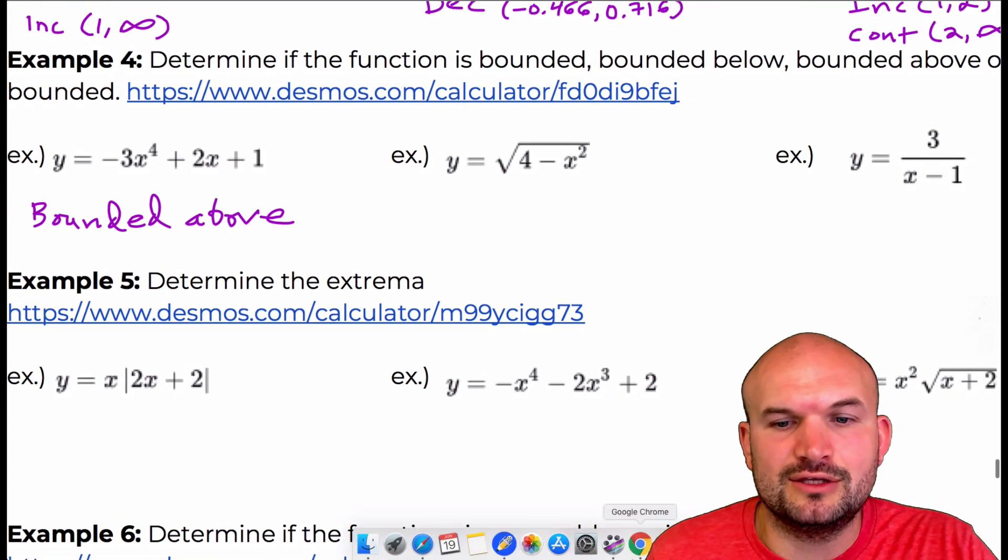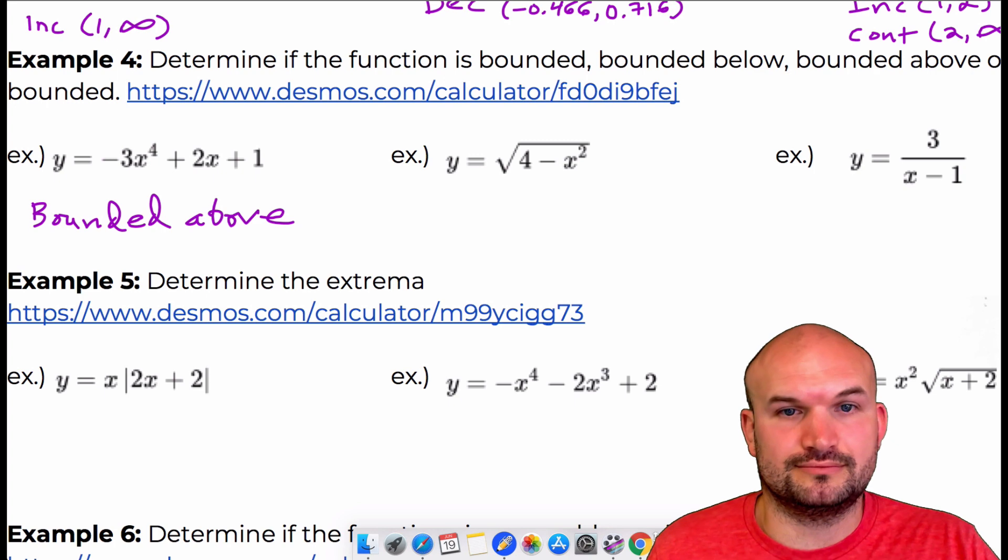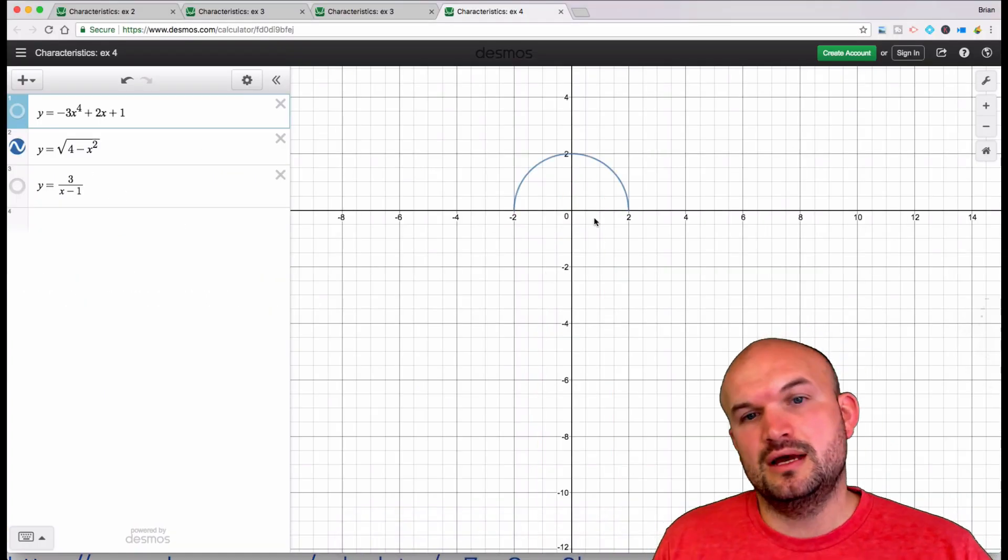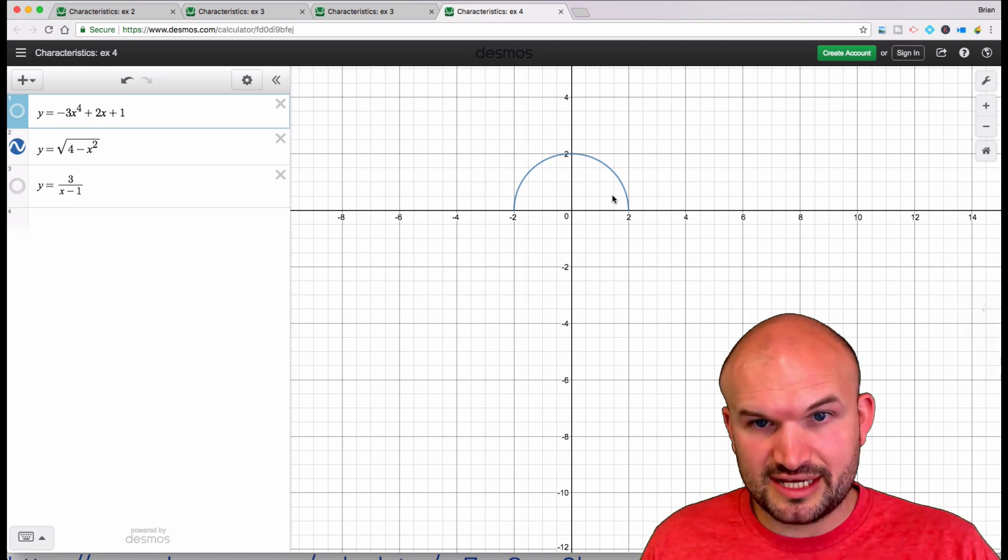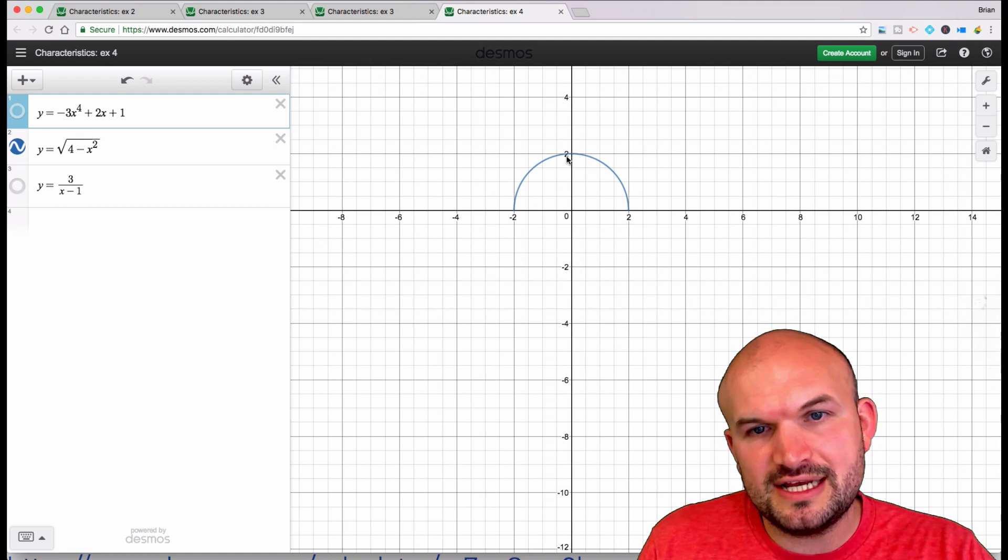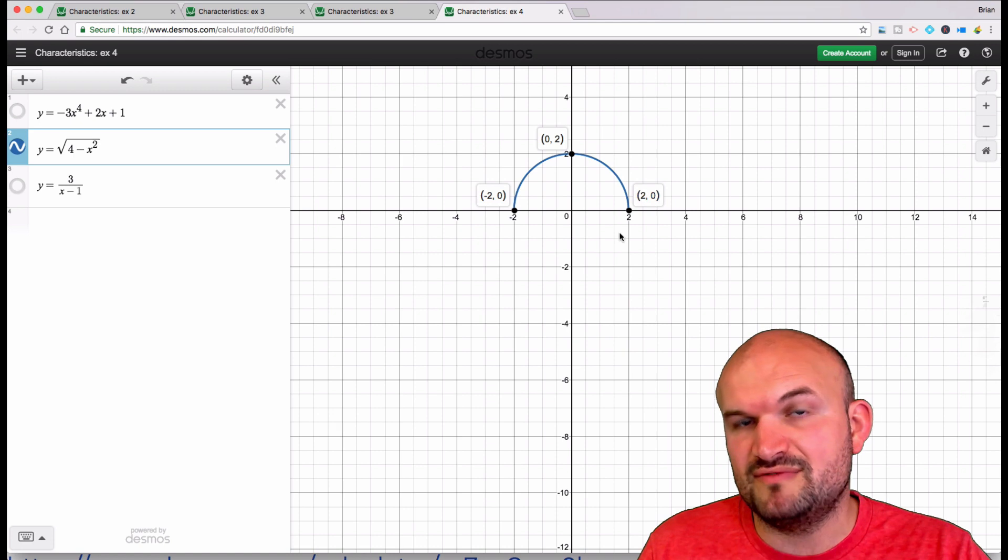Let's go back and look at the next equation here. So the next equation. Interesting. So this looks like a semicircle, right? It's kind of like half a nice little circle. So you can see here that, again, I have a maximum, and then I actually have two absolute minimum values.